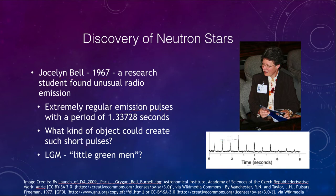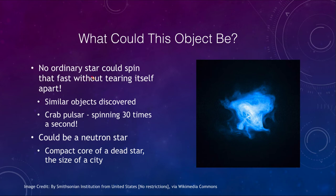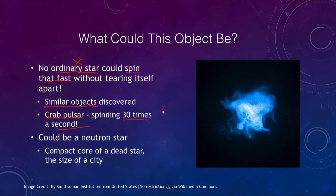What had Jocelyn Bell found? There was no way it could be an ordinary star, because a star could not spin fast enough without tearing itself apart — the centrifugal forces would rip it apart. It had to be something very compact, very small, and extremely strong. In the Crab Nebula, the crab pulsar was spinning 30 times a second, making the problem even harder. The only thing that could survive those forces is, as we now know, a neutron star.